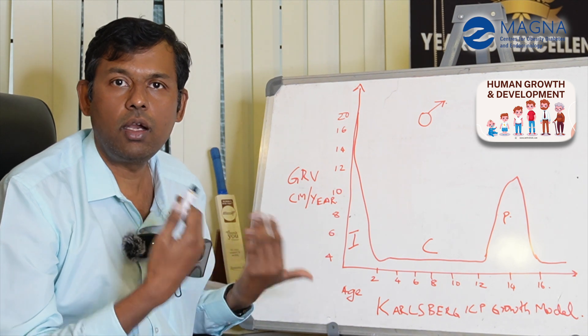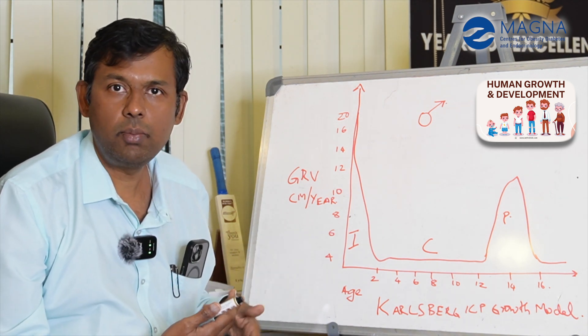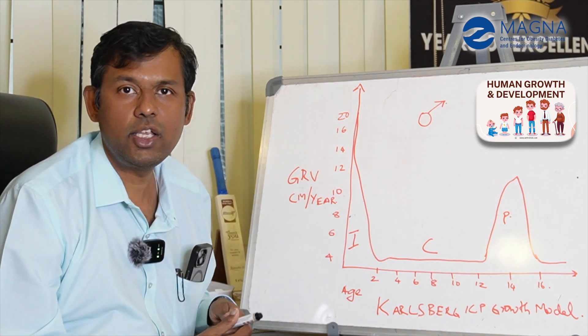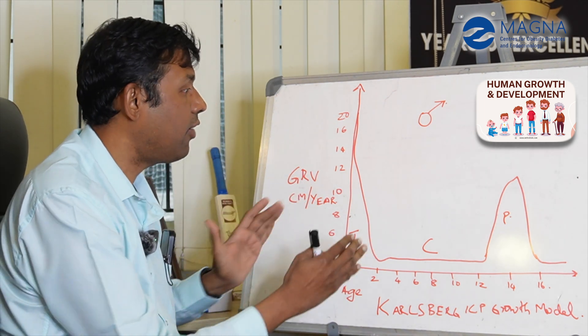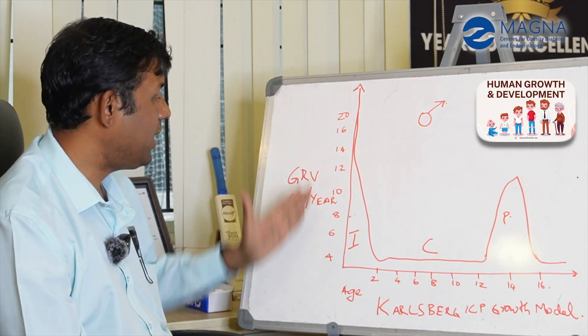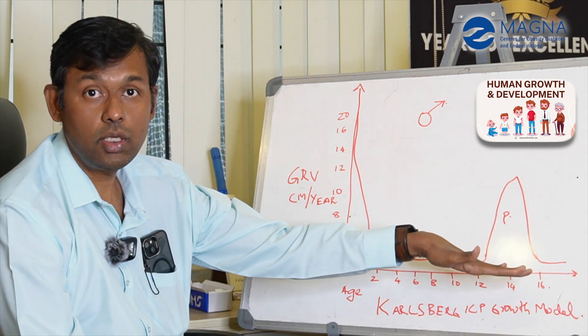This is called the Carlsberg ICP model. This is a graph which shows growth velocity on the y-axis and age on the x-axis.